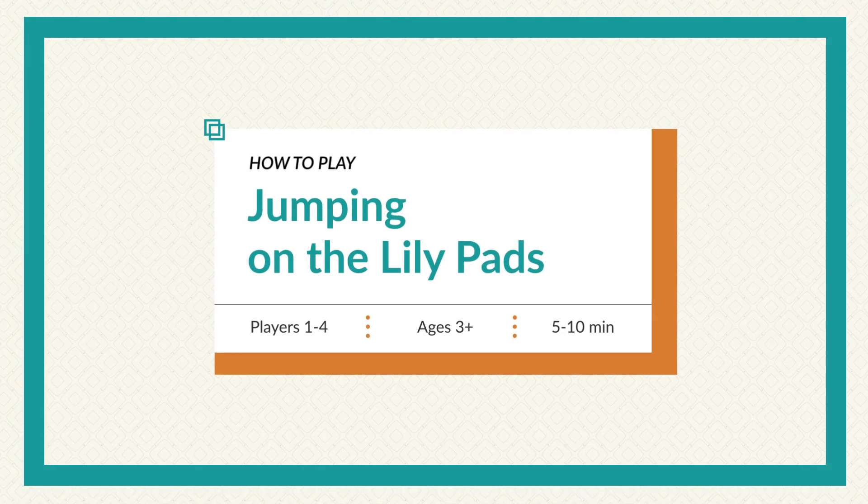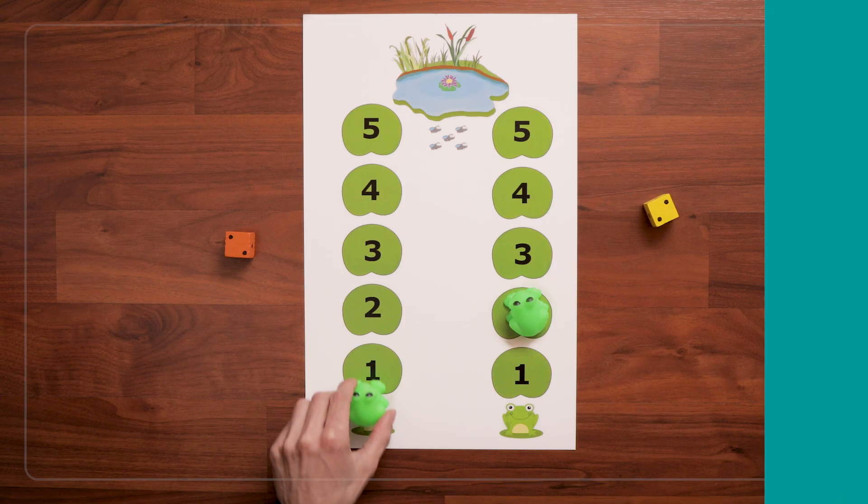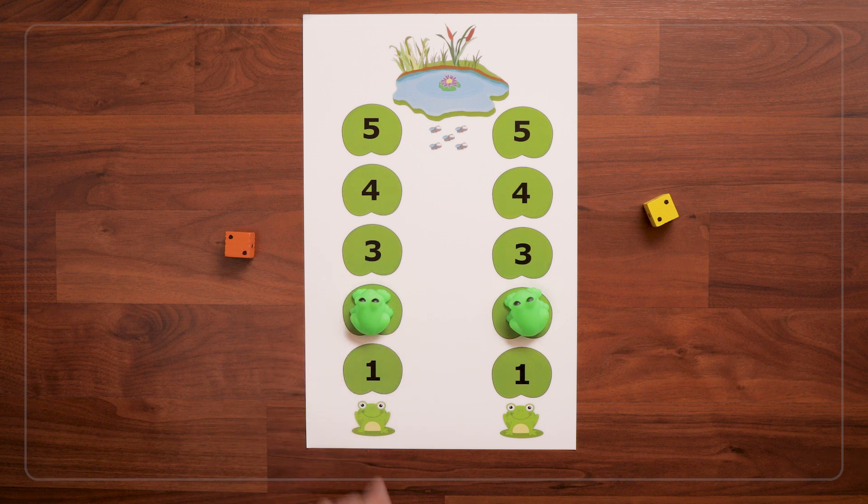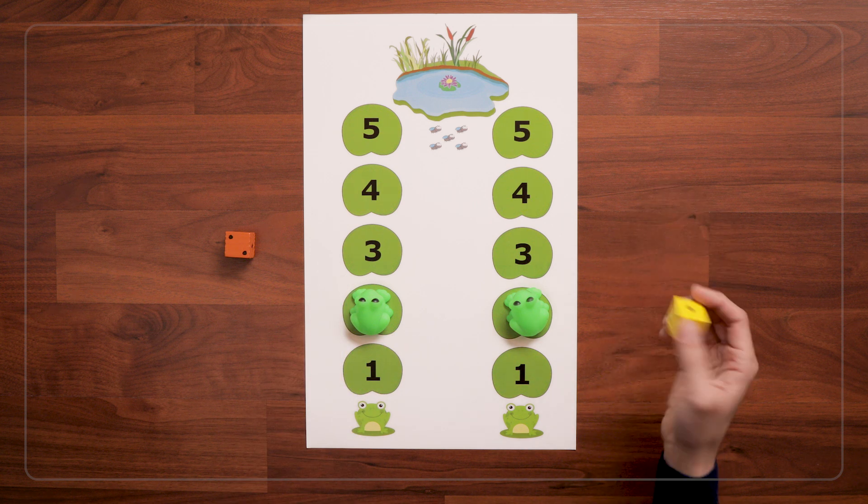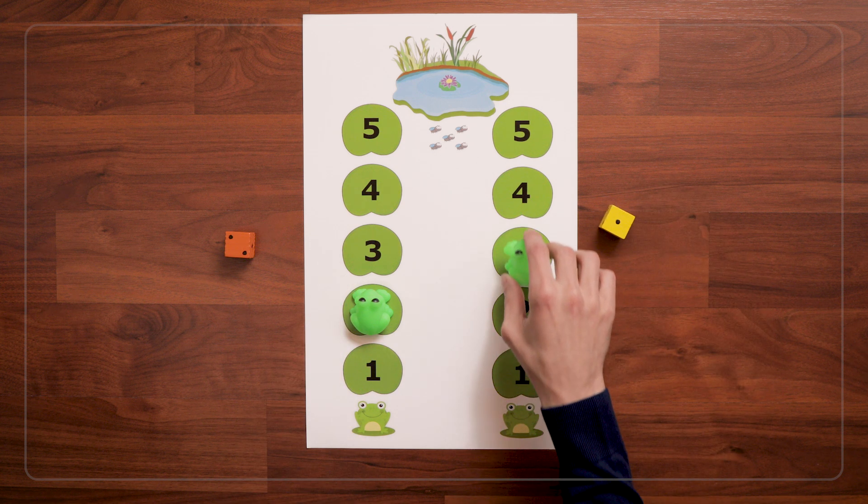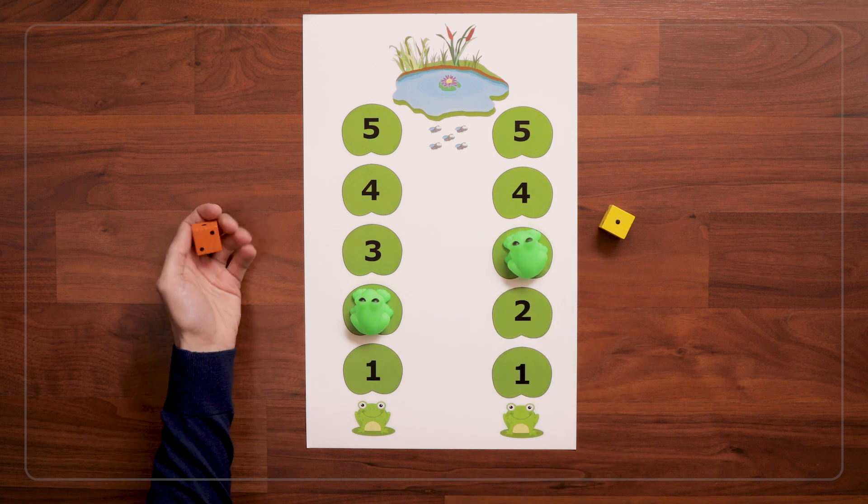This game is called Jumping on the Lilypads. The goal of this game is to roll a die and jump your game piece to the end of the board. In this case, we're jumping frogs on numbered lilypads to go swim in the pond at the end.